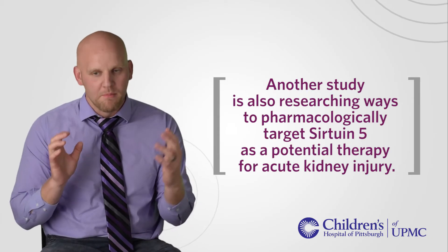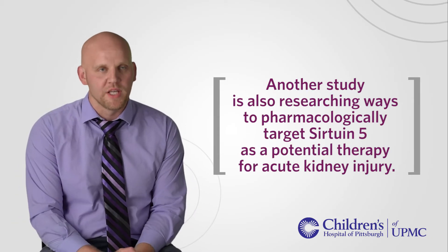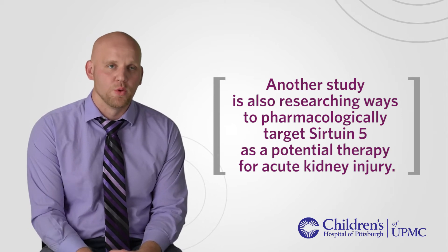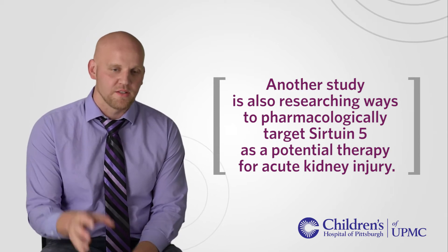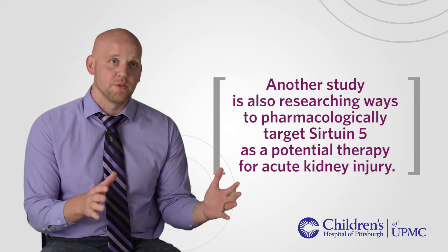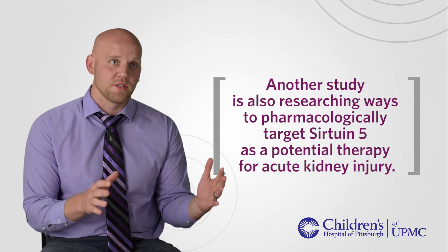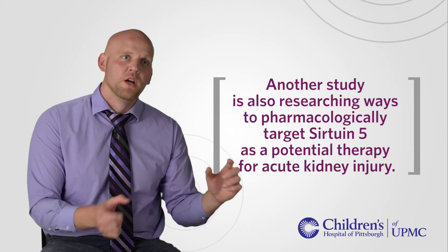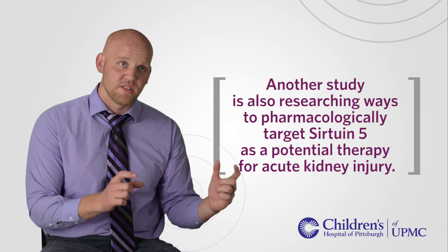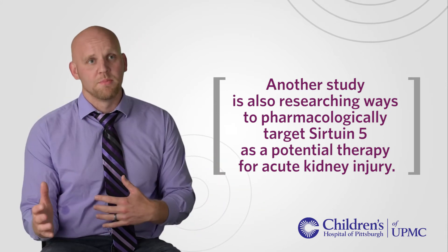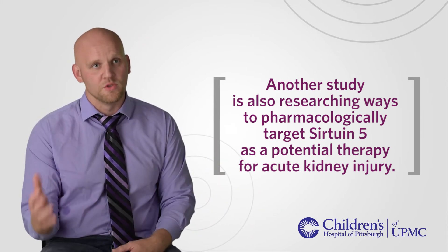The other work we've been doing is looking at mediating critical genes, and one of those that we're looking at is sirtuin 5. We've actually found that when we knock down sirtuin 5, this shuttles fatty acid oxidation away from the mitochondria, where you produce reactive oxygen species which is deleterious to the kidney, towards the peroxisome.